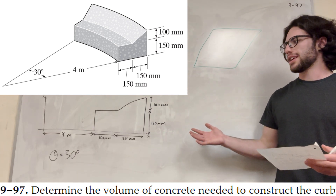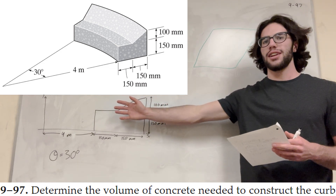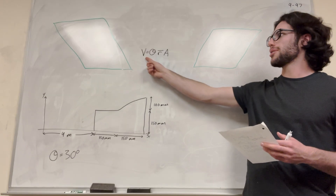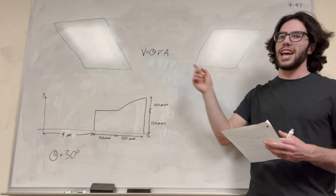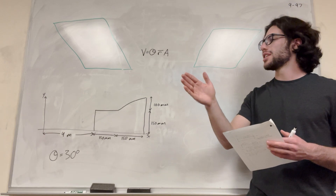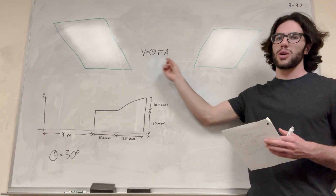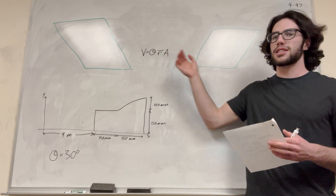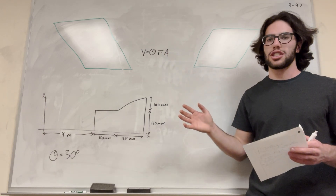When we're doing a problem like this, I went ahead and flattened it onto a 2D plane and then we're going to use this equation. The equation says volume is equal to theta, which is the angle of rotation — basically how much we're rotating it around an axis — times radius, which is the distance from the axis to the center of mass, and then area is the area of the shape.